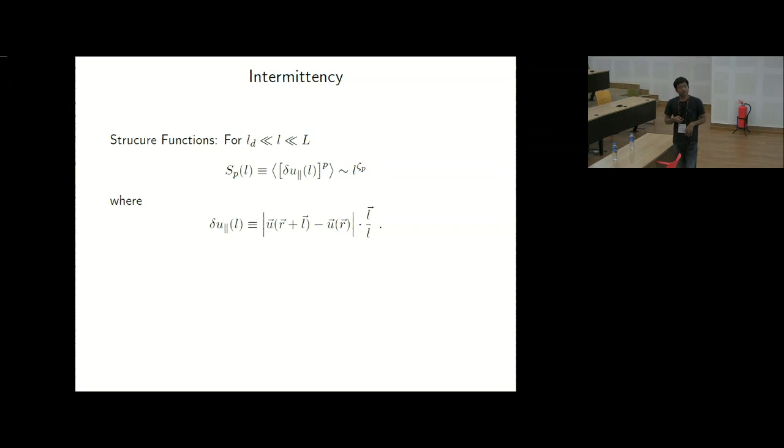Now we define, to characterize this probability distribution of velocity fluctuations, we define a structure function. A structure function is increment to the power P. Now, as I showed the spectrum, in the inertial range, if we assume that all the length scales are similar to each other, if you zoom in and see the same behavior in terms of velocity distribution, we call it self-similarity. So if self-similarity is assumed, we assume that this structure function is a power law in L.